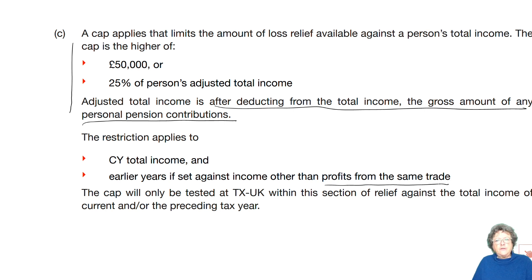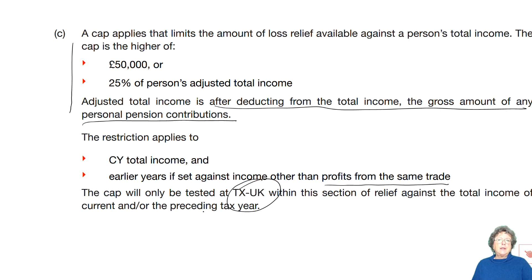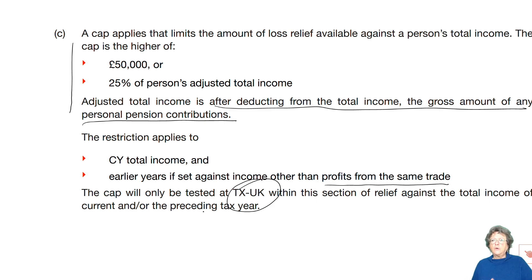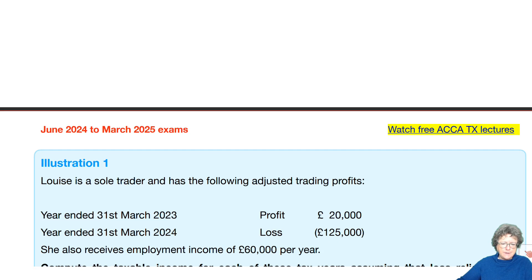This is easier when we look at an example than it is to look at the words. The cap is only tested at TX within this section of relief against total income for current year and all preceding years. So if you get one of these claims and it's obvious, then this is the information you need to bring to bear, added to the rules that you're thinking about. I have an illustration here which will help you understand this a little better.